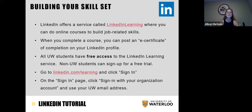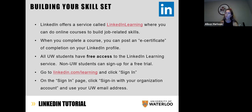When you're building your skill set, LinkedIn has a service called LinkedIn Learning where you can do online courses to build job-related skills. When you complete a course, you can post an e-certificate of completion to your LinkedIn profile. As a UWaterloo student, you will all have free access to LinkedIn Learning. You'll go to linkedin.com/learning and click Sign In. On the sign-in page, click 'Sign in with your organization,' then select UWaterloo and enter your UWaterloo email address and WatIAM credentials — that will allow you to get in with the free learning.